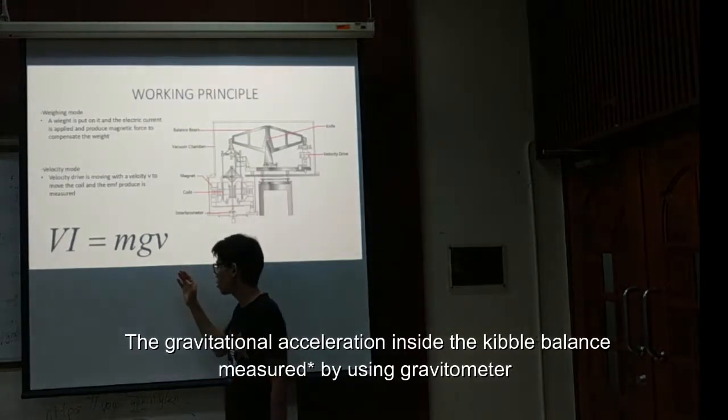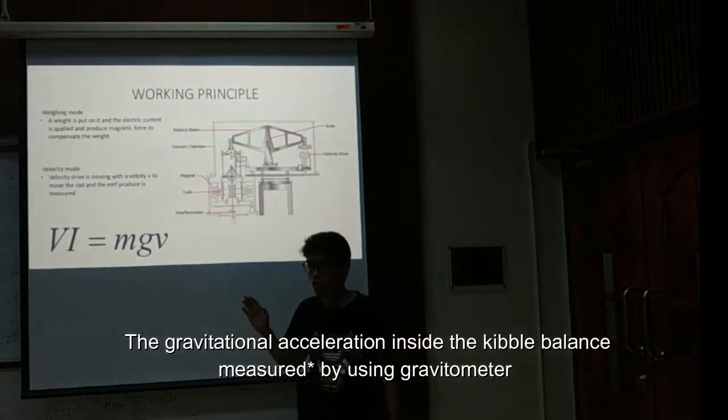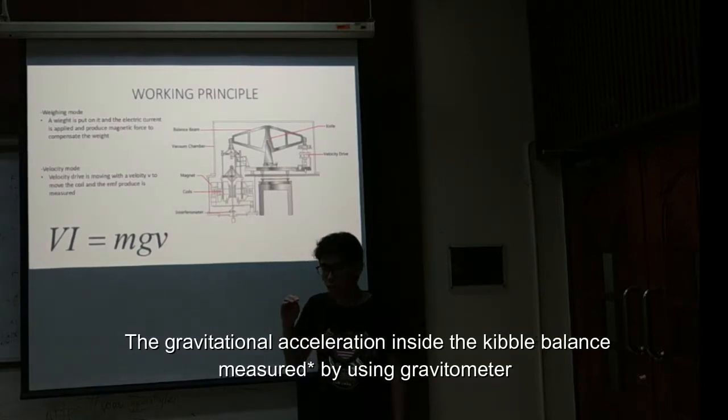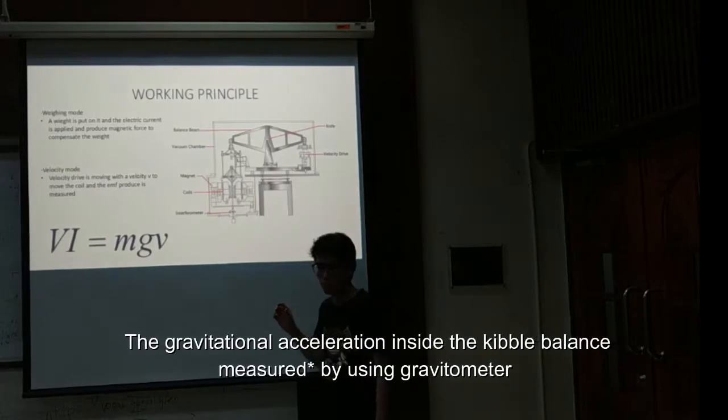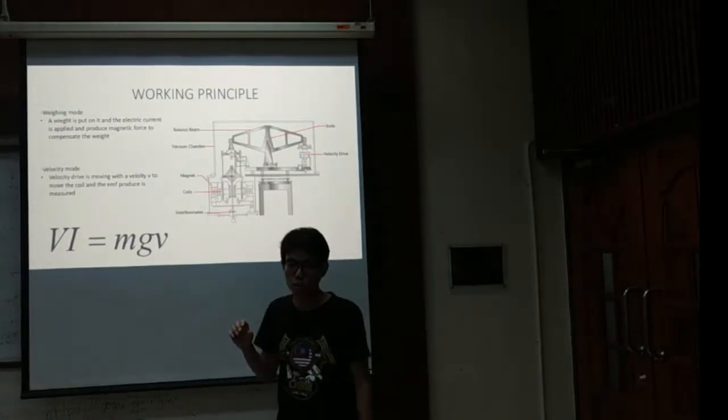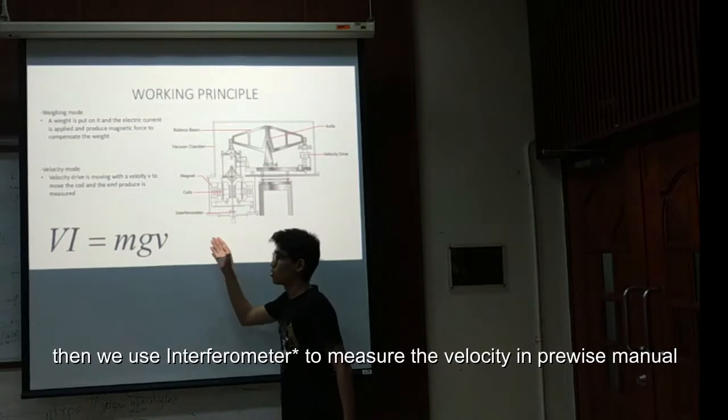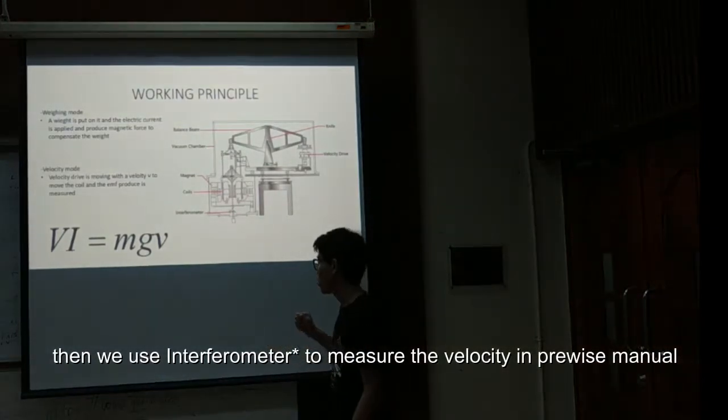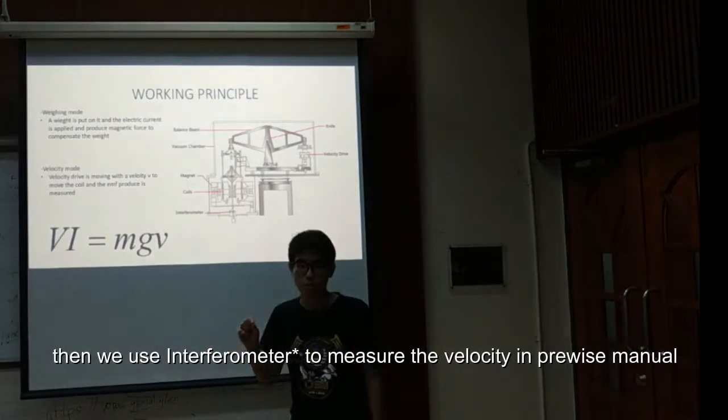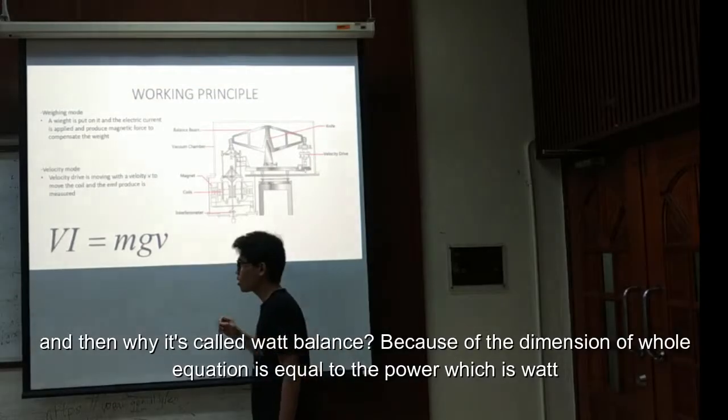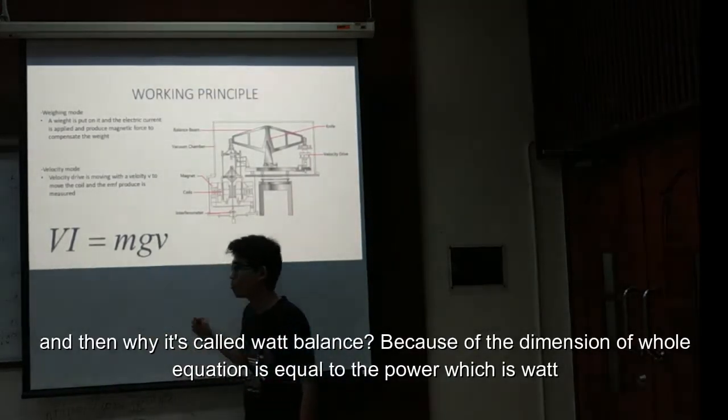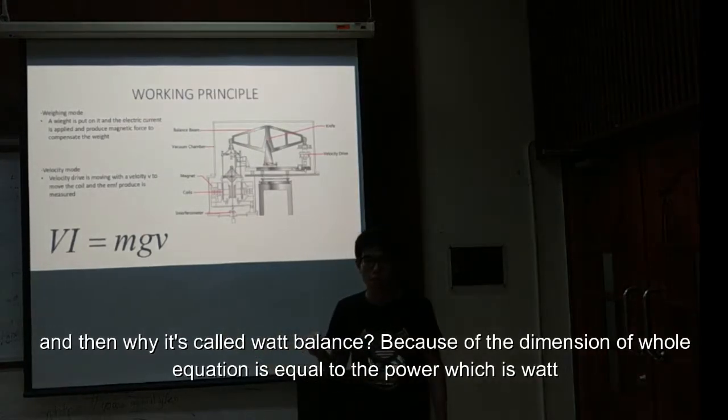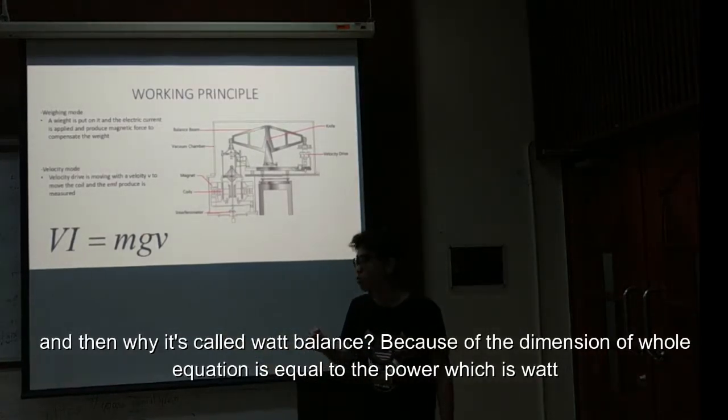The mass of the sample can be calculated in a very precise manner. The gravitational acceleration is measured using a gravimeter, and we use interferometry to measure the velocity in a very precise manner. That is why it is called watt balance, because the dimension of the whole equation is equal to power, which is watt.